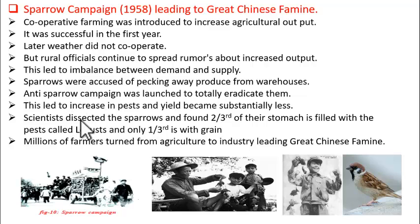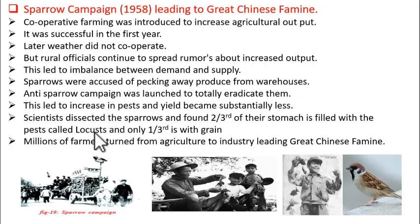Scientists then dissected the sparrows and found that two-thirds of their stomach was filled with pests called locusts, and only one-third contained grain.